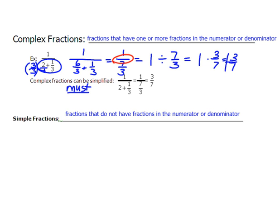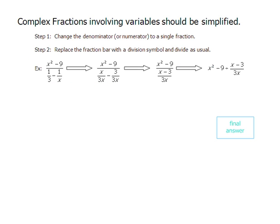That was a simple case, but when we get into complex fractions involving variables it's not quite so straightforward. The process is: simplify both the numerator and denominator to a single fraction, then replace the fraction bar with a division symbol and divide as usual using keep-change-flip.